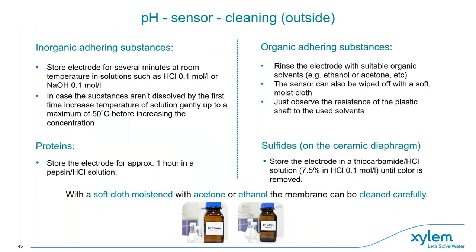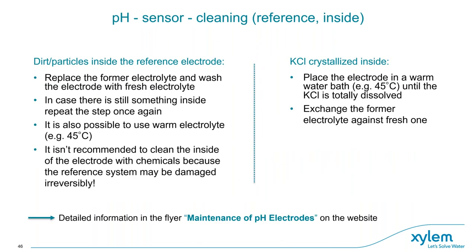For cleaning the outside of the sensor, electrodes with flush and platinum diaphragms can generally be cleaned with the same solvents and acids you would use to clean your beaker — but of course, no dishwasher, no ultrasonic cleaner, and no microwave. Cleaning the inside is more challenging because that is where all the functioning elements are. If necessary, it must be done very carefully using only water or electrolyte. Detailed information is available in the maintenance flyer on our website about how to treat pH electrodes inside and outside.